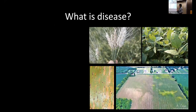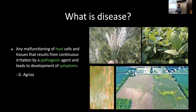Before I start, I want to make sure that everybody is on the same page in terms of concepts. So what is a disease? Here we're looking at any malfunctioning host cells and tissues that result from a continuous irritation by a pathogenic agent. The ultimate outcome of these are symptoms. This is what we do in pathology — not only in plant pathology, but also in human and animal pathology: we're looking for symptoms.